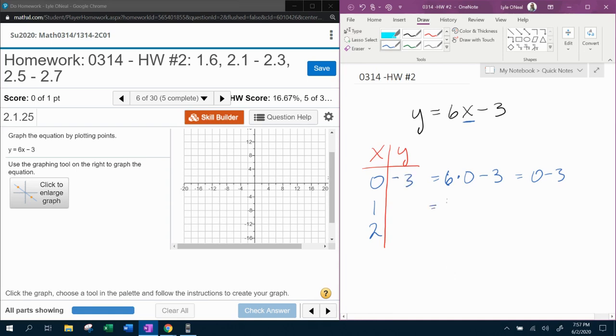And then we're going to do the same thing with 1. 6 times 1 minus 3, that's going to be 6 minus 3, which is 3. And one more time, 6 times 2 minus 3, 12 minus 3, which is 9.